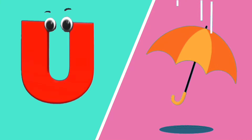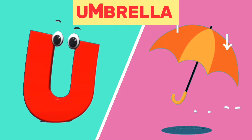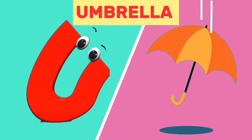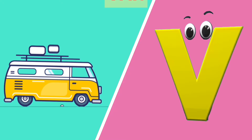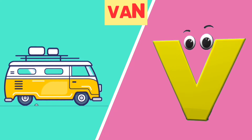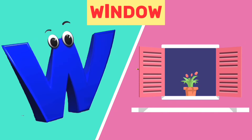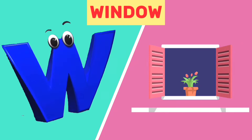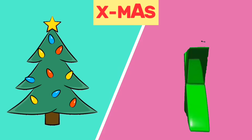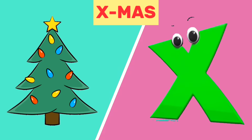U is for umbrella, u, umbrella. V is for van, v, van. W is for window, w, window. X is for Xmas, X, Xmas.